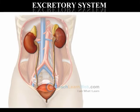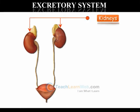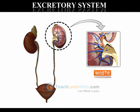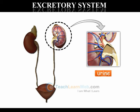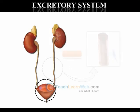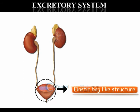The harmful waste substances are dissolved in water and removed as urine. Urine is formed in the kidneys and is sent to the urinary bladder through tubes called ureters. It is stored in the bladder for some time. The urinary bladder is an elastic bag-like structure which can store large volumes of urine. Urine is passed out through an opening called the urethra.